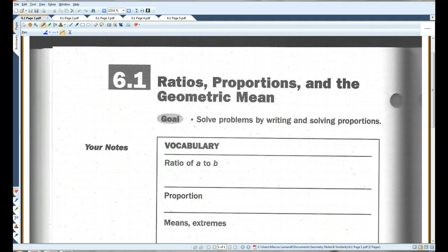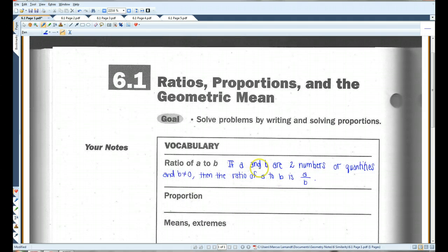The ratio of A to B. If A and B are two numbers or quantities, and B does not equal zero, then the ratio of A to B is A over B.